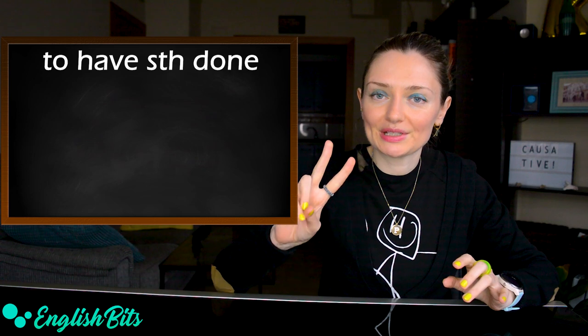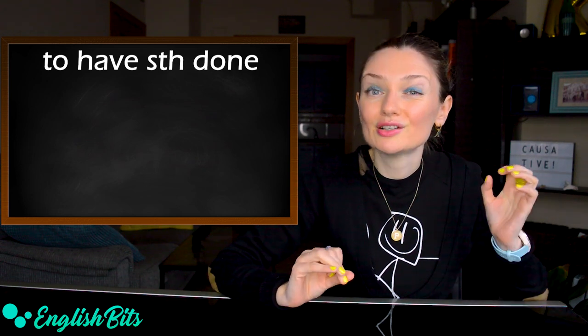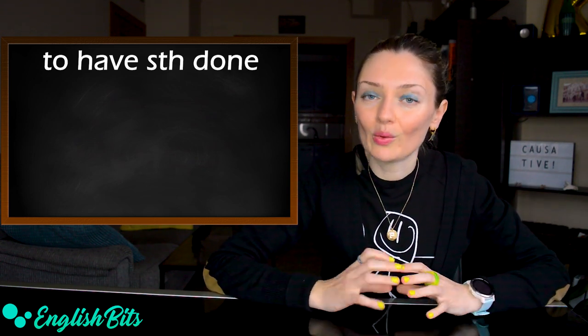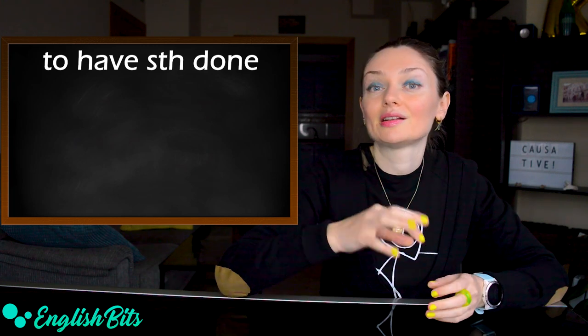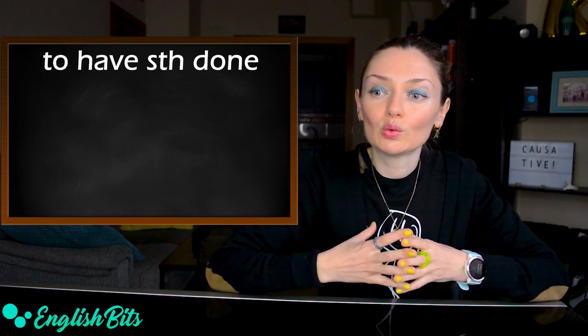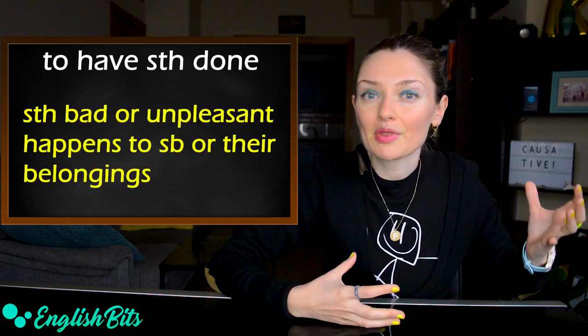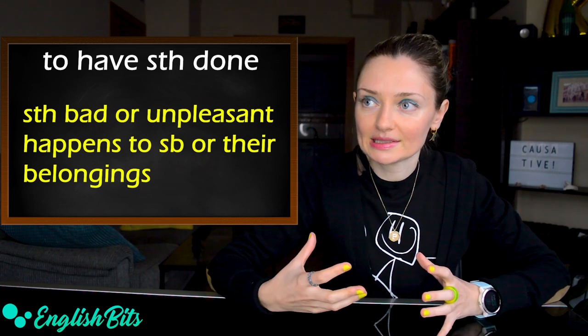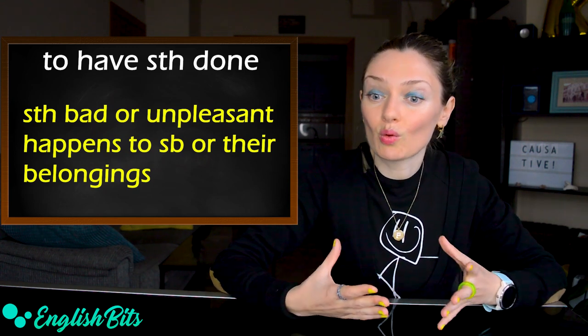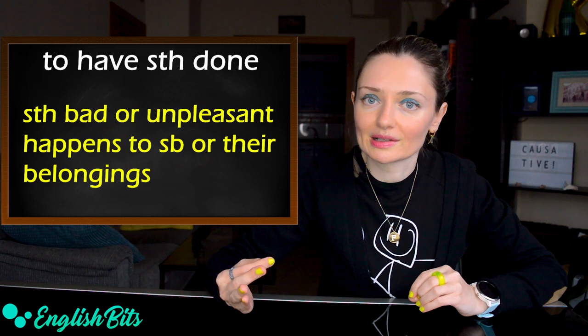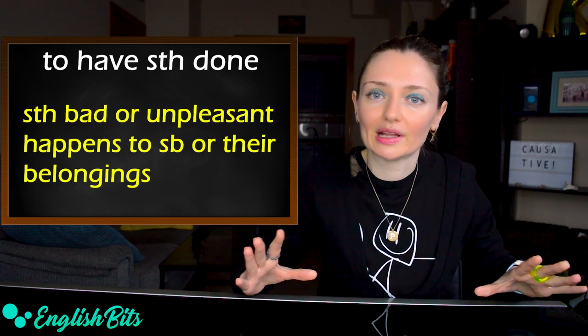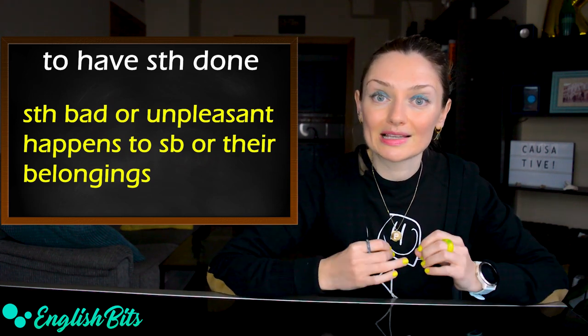And now let's move on to the second causative structure: to have something done. We can only use to have and not to get when we want to say that something bad or unpleasant happened to someone or their belongings. We didn't organize it. And now let's look at some examples.